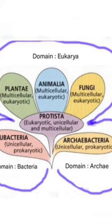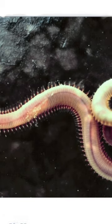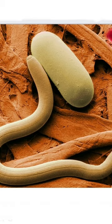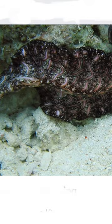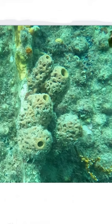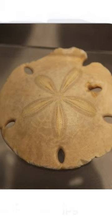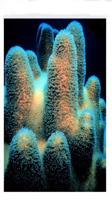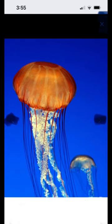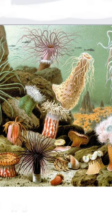In the animal kingdom, the list of animals includes segmented worms, round worms, flat worms, sponges, starfish, sea urchins, sand dollars, coral, and jellyfish.